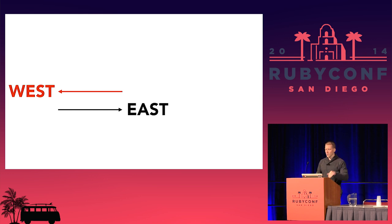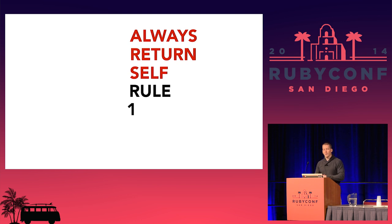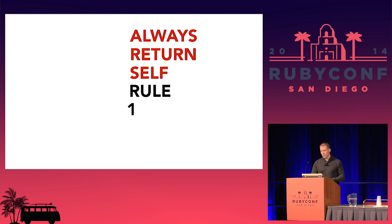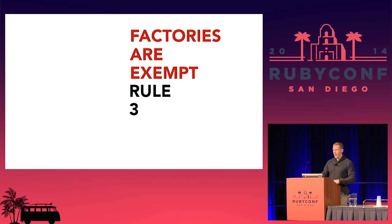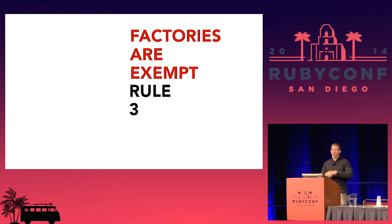So let's go over a couple of rules, then get into the code and how to apply them. Rule number one: always return self. Rule number two: objects can query themselves. And factories are exempt. It doesn't make any sense yet — it will.